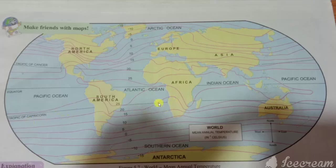Can you see the isotherms and the curve nature of the lines? This was figure 5.7, world mean annual temperature.